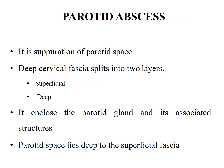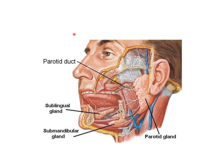Parotid Abscess is the suppuration of the parotid space. Deep cervical fascia splits into two layers, superficial and deep, to enclose the parotid gland and its associated structures. The parotid space lies deep to its superficial fascia. This picture shows the parotid gland and the parotid duct — the Stensen's duct — which opens opposite the second molar tooth.